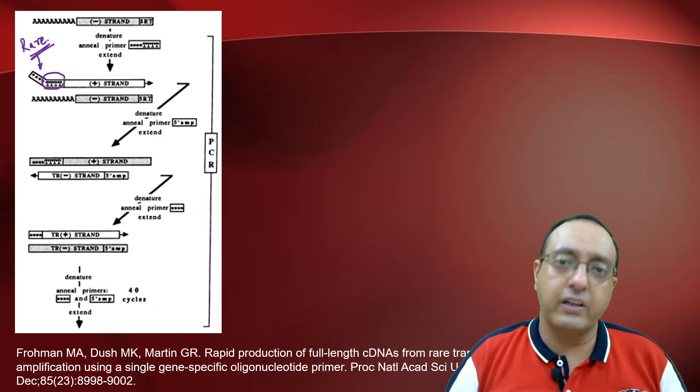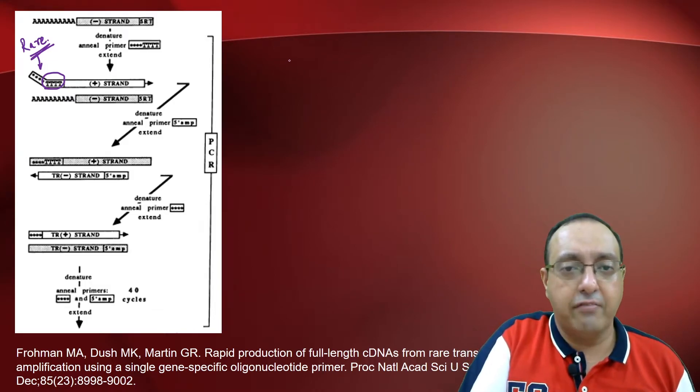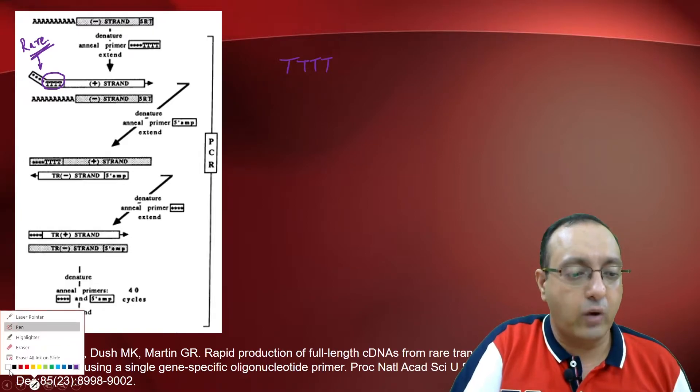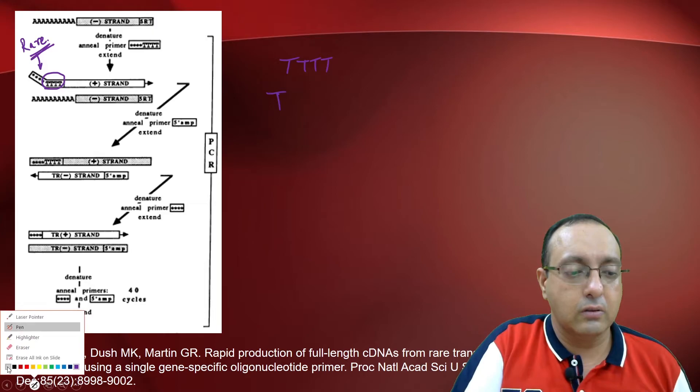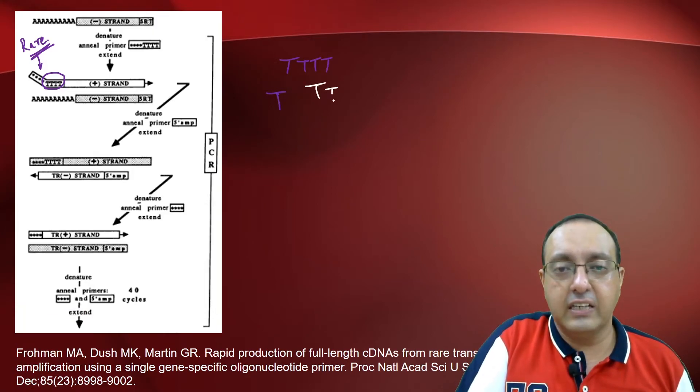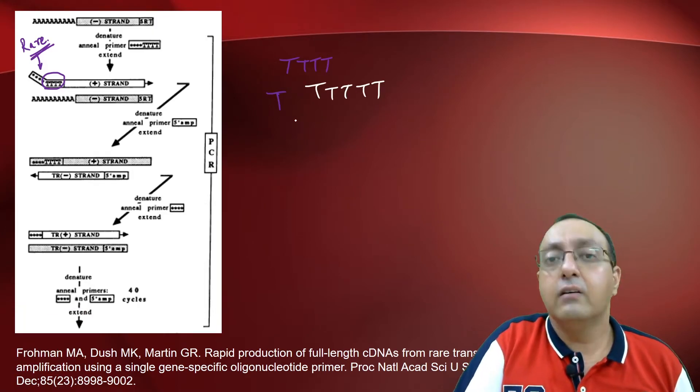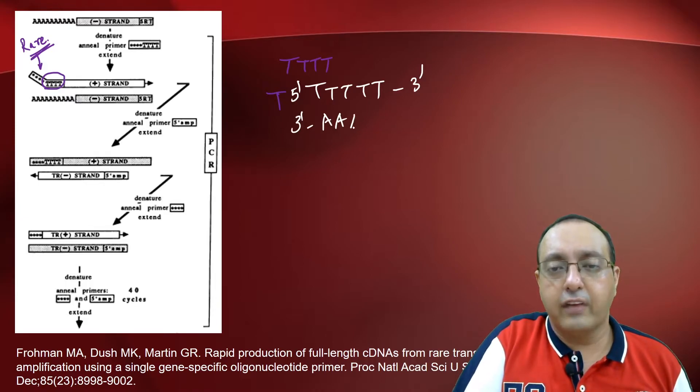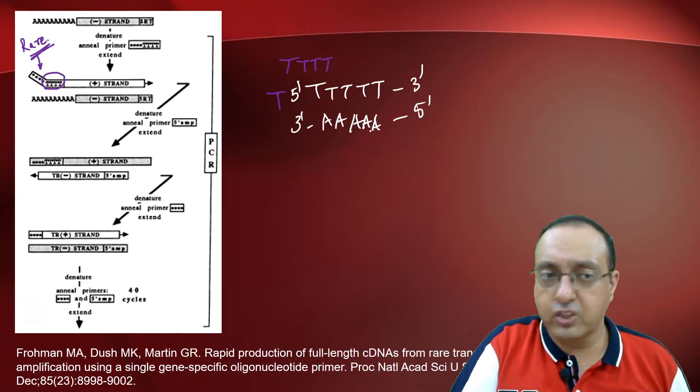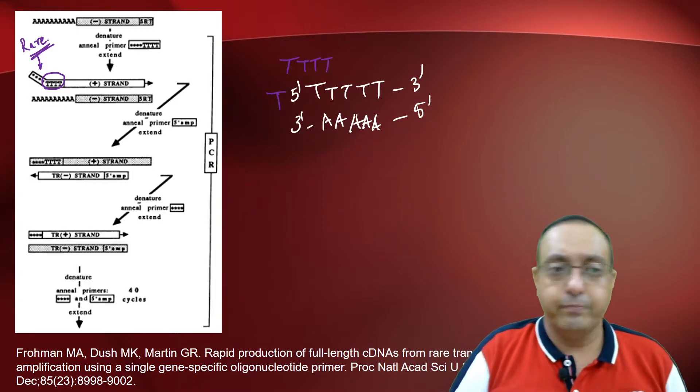So this will form a double-stranded DNA product which will have T's at the, write it in white. These will have T's in the 5' to 3' direction and a lot of A's in the 3' to 5' direction. So this is your DNA.